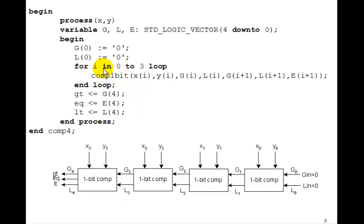Third time through the loop, i is equal to 2. The inputs are x2, y2, g2, l2. Outputs are g3, l3, and e3.